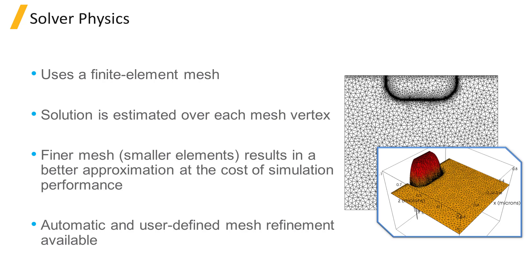Automatic mesh refinement is a feature that automatically uses a finer mesh, for example around areas where there is a sudden change in properties such as doping and heat generation, to more accurately resolve these changes.